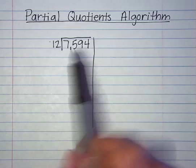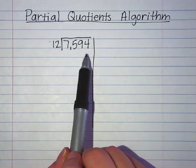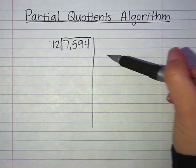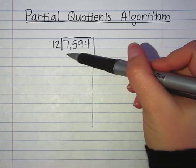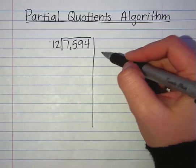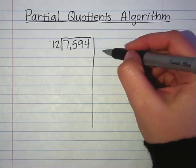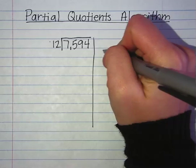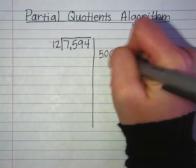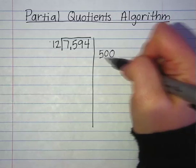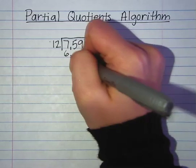So now I start off by thinking: 7,594 — how many times can 12 go into that? I think off the top of my head, what about 100? If I started off with 100 times 12, that would give me 1,200 — kind of a small number. I know that 5 times 12 is 60, so 500 times 12 would be 6,000. I think that would be a good way to start. So I'm going to start off with 500 as my first partial quotient. It wouldn't matter what you start off with, though. So then we do 500 times 12, and I get 6,000.